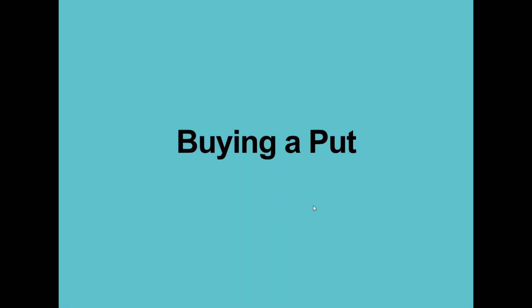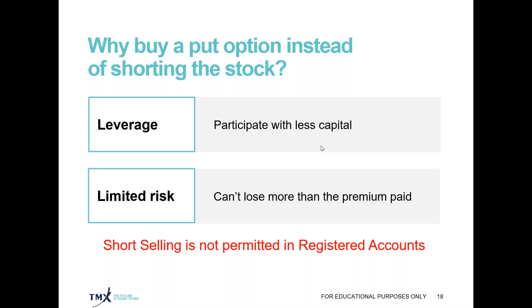Now let's look at buying a put option as a bearish stock replacement strategy. Short selling is not permitted in registered accounts, so you really don't have much choice if you are bearish on a company and want to participate on the downside. Why buy the put option instead of shorting the stock? You can't short sell in a registered account. Same as with the call option, you have an opportunity to participate with less capital by paying out the put premium, and your maximum risk is the premium that you pay — limited to the capital outlay calculated based on the cost of the contract times the 100 unit multiplier times the number of contracts.